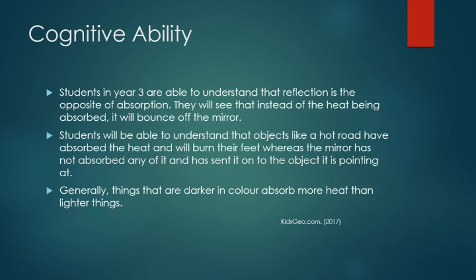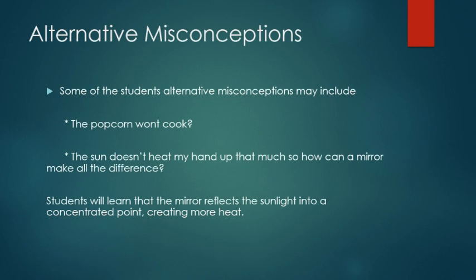Generally, things that are darker in colour absorb more heat than lighter things. Some of the students' alternative misconceptions may include: the popcorn won't cook, or the sun doesn't heat my hand up that much, so how can a mirror make all the difference? Students will learn that the mirror reflects the sunlight into a concentrated point, creating more heat.